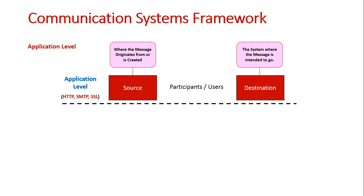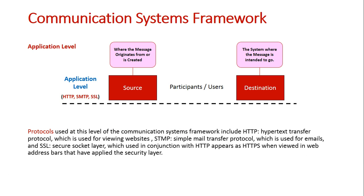We also need to understand the different protocols used at this application level. HTTP is hypertext transfer protocol, which is used for viewing websites. SMTP is simple mail transfer protocol, which is used for emails. SSL is the secure socket layer, which is used in conjunction with HTTP and appears as HTTPS in web addresses, adding security. This gives you an understanding of the application level of the communication systems framework and how it is the end that users interact with — both in creating messages and in accessing messages addressed to them.